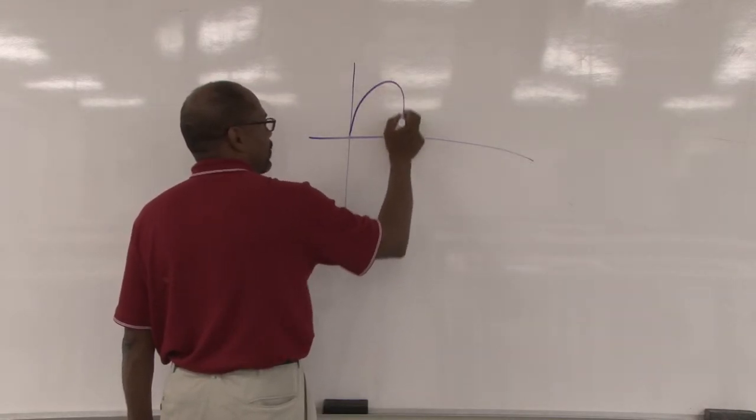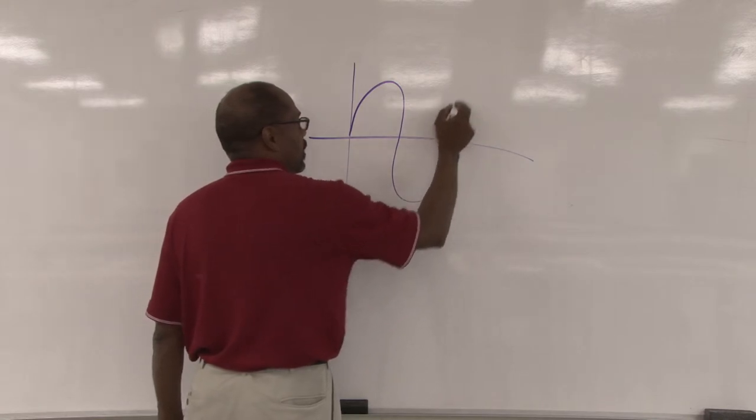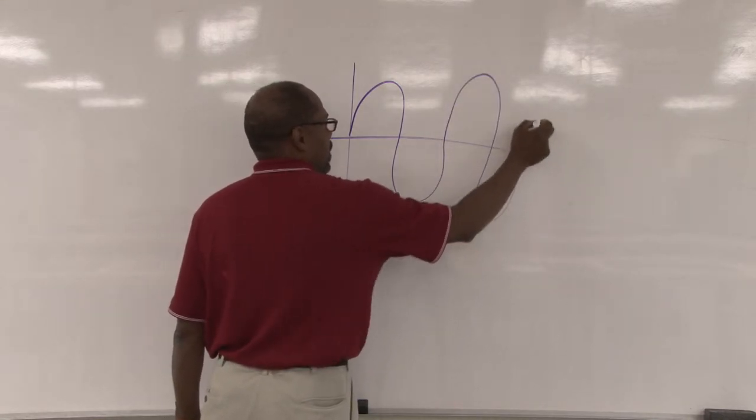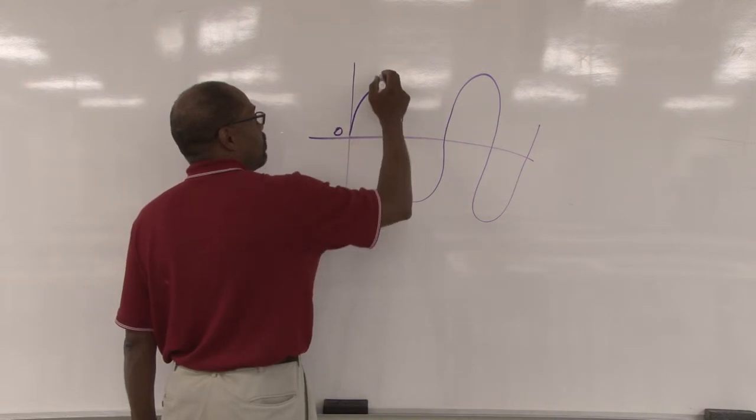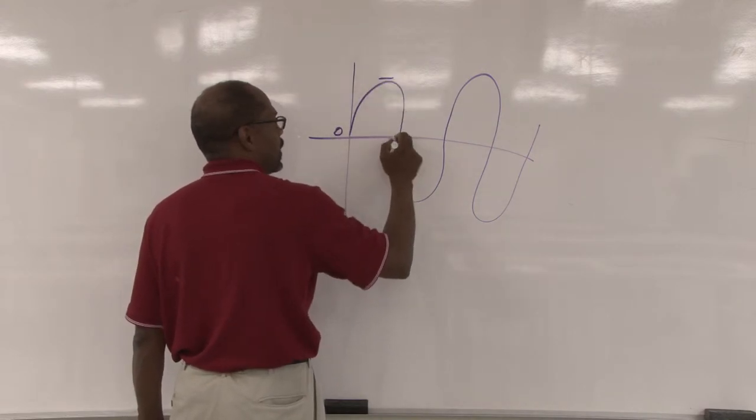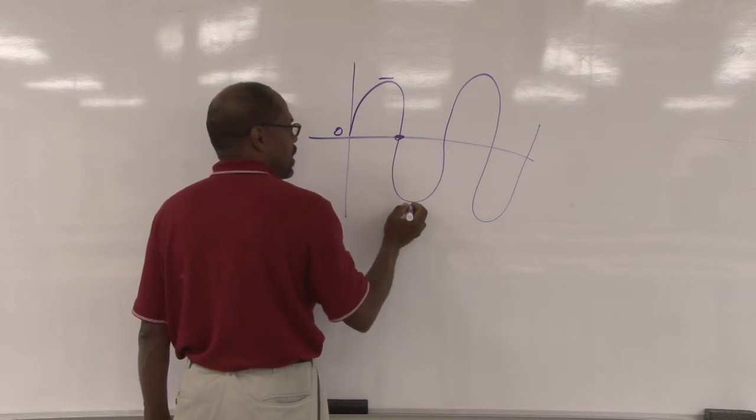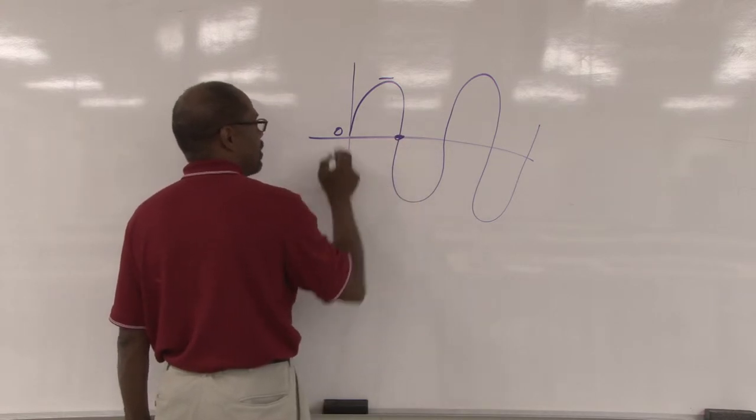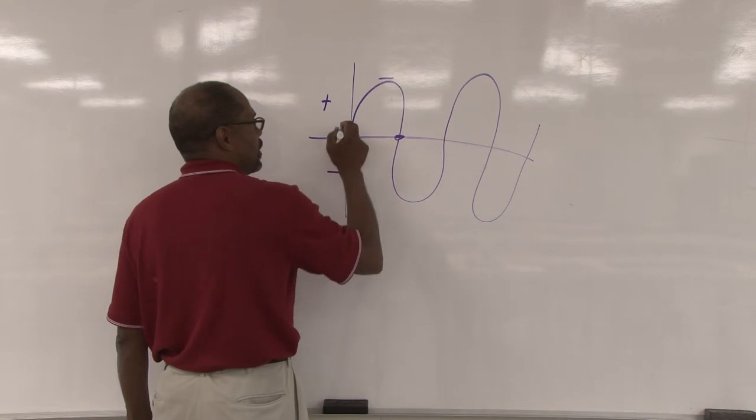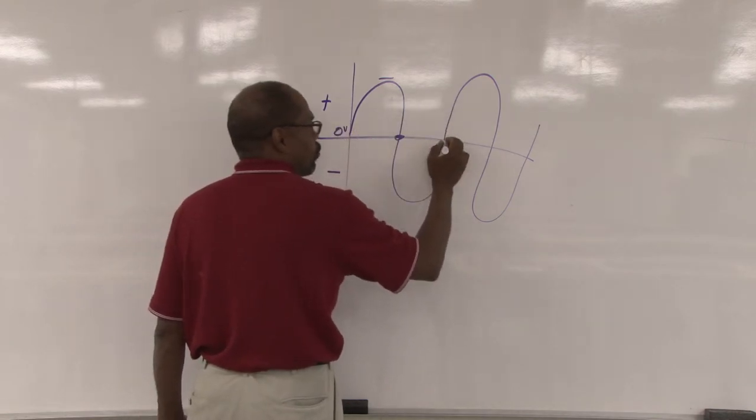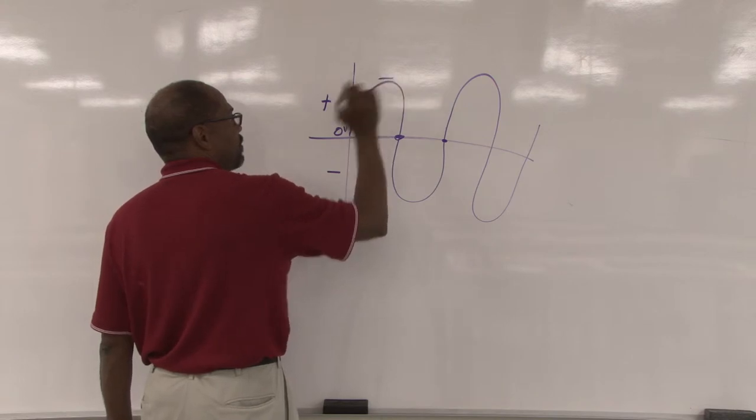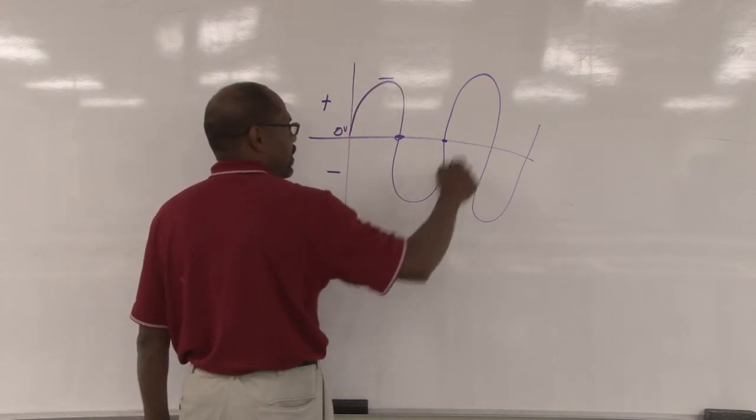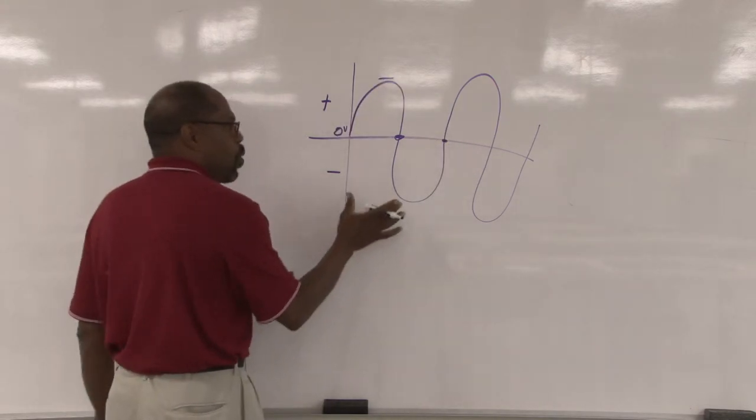Basically, by taking that same motor, starting at zero volts, going to peak voltage, going to zero again, peaking negatively—this is the negative, this is the positive, this is zero—and going back to zero again. So it'll go to the peak positive, peak negative, and back to zero. That is one cycle.